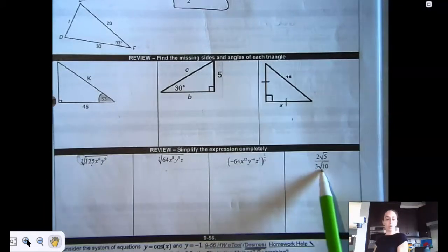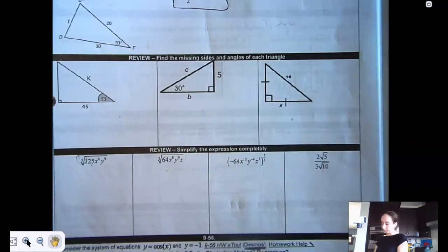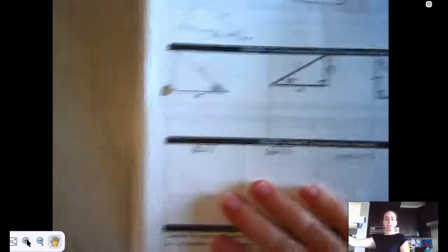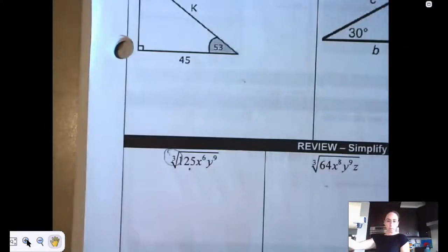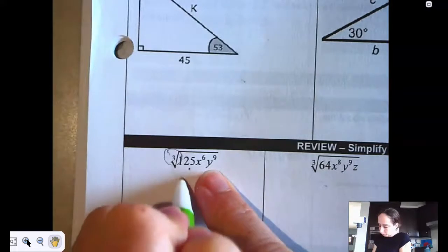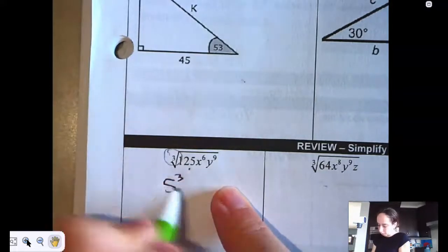And this one, remember, you can't have a radical in a denominator. You know what, I think I'll actually do this one just because I'd rather you make sure you're going to get this one right. So I know that 125 is the same thing as 5 cubed.